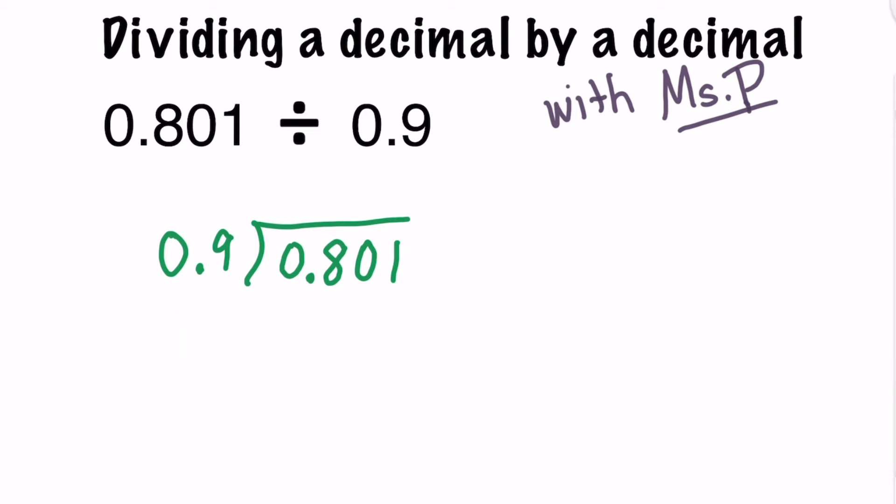So we're going to take the divisor of 9 tenths and we're going to multiply it by a power of 10. To do that, we're going to move the decimal point one place to the right. By multiplying that number by just one power of 10, we have already created a whole number. The decimal has now moved one place to the right, and the 9 has shifted into the ones place.